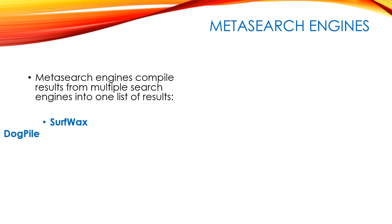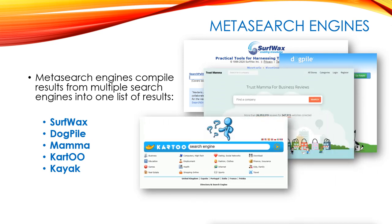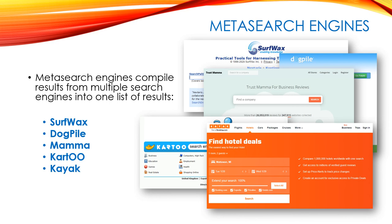Finally, we're going to look at something called meta search engines. A meta search engine is a search engine that searches other search engines and collects information — a level up from a regular search engine, taking advantage of all those databases and running the search on all of them simultaneously for a more comprehensive list of results. Some of these are specialized — we'll be using Kayak in our lab this week. Others include Surfwax, Dogpile, Mama, and Cartoo. You may get a wider variety of hits, taking advantage of numerous search algorithms that different companies use, which do vary.